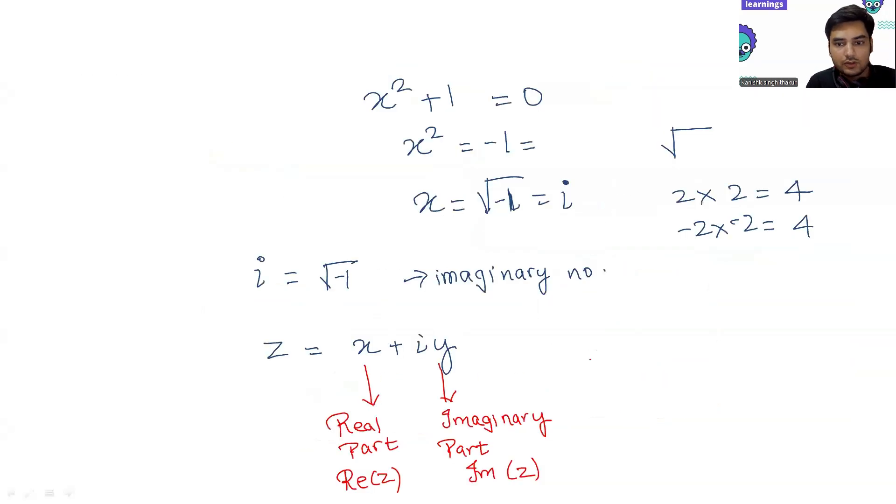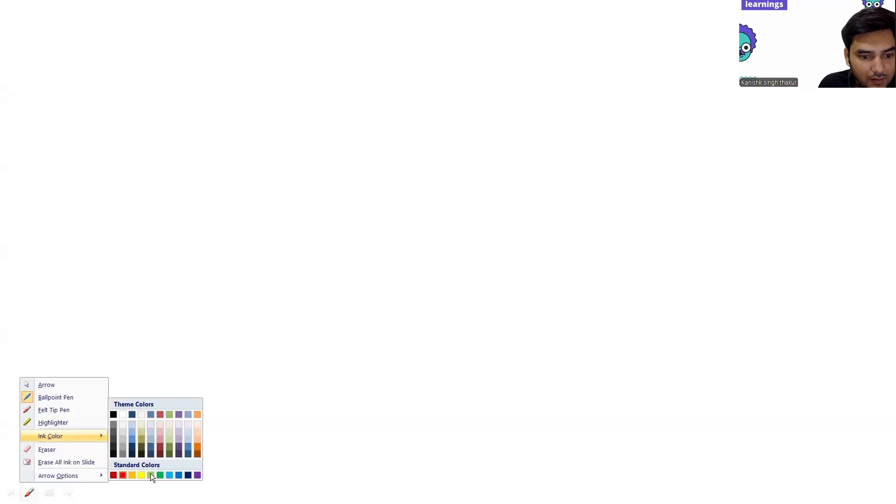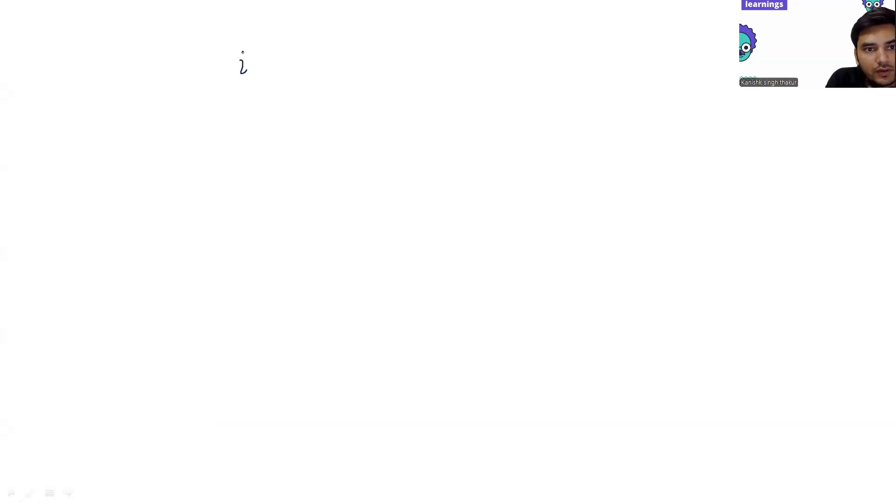So suppose you have a question saying what would be i to the power 19. I'll directly divide that number by 4. 4 times 4 is 16, so I can write 4 times 4 plus 3. This value will turn out to be 1, and then I have i cube remaining. So that would be minus i. So that's how you'll be doing the things.